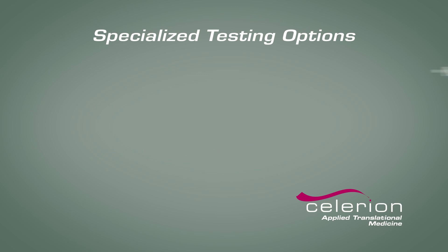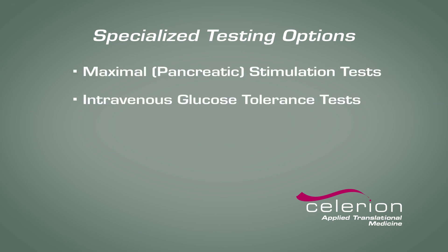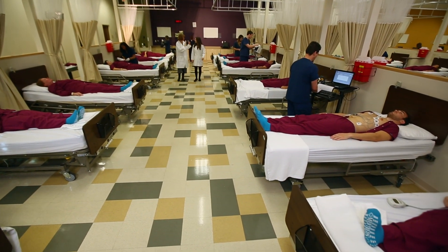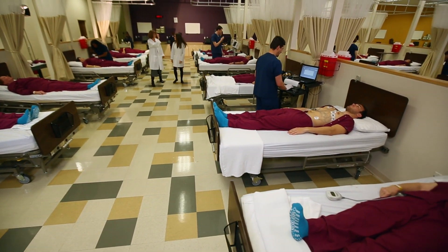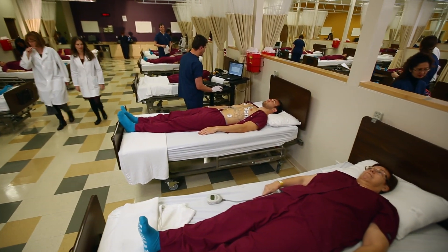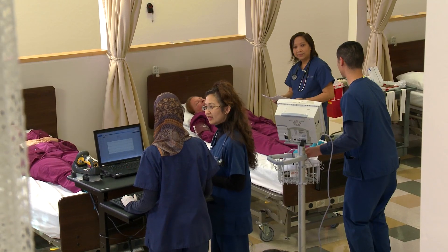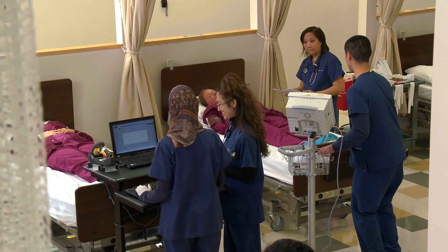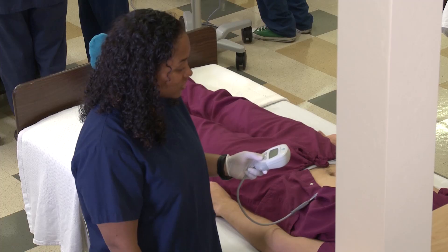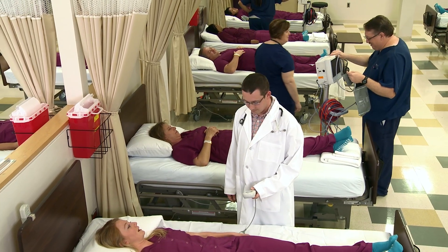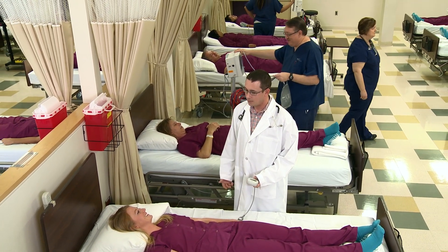More esoteric measures of metabolic and cardiometabolic efficacy include maximal pancreatic stimulation tests, intravenous glucose tolerance tests, glucose clamping, indirect calorimetry, and flow-mediated dilation. In addition to getting early looks at possible efficacy, we help evaluate other effects on cardiovascular safety, which is often a concern with anti-diabetic and anti-obesity drugs. Our Phoenix facility has been specifically designed with Holter monitoring equipment and highly automated ECG signal analysis that enables us to identify and assess any drug-related effects on cardiac electrophysiology.